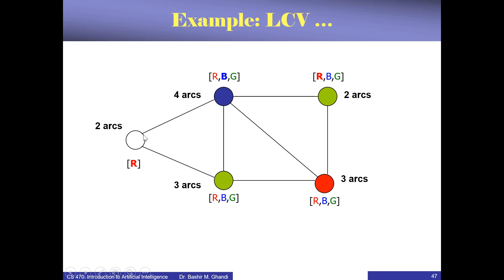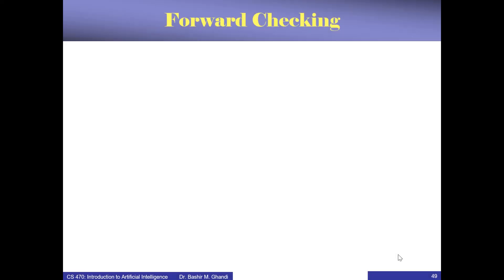Green is the least constraining value for that node because after choosing green, we still allow the other node to have red. This is the idea of this heuristic — it will allow the solution to continue without breaking. If you choose a most constraining value, the solution may break immediately. So far we have seen three different ways of improving the backtracking search algorithm, all involving either selecting a certain variable or selecting a certain value.